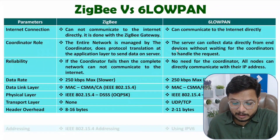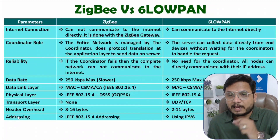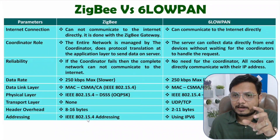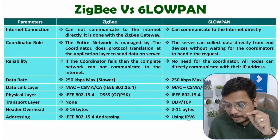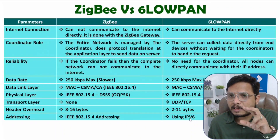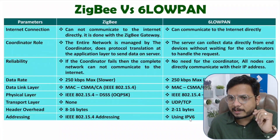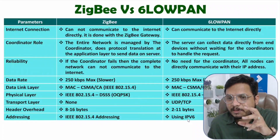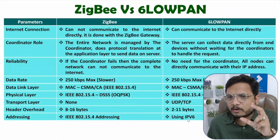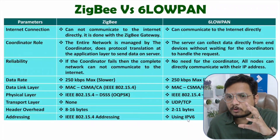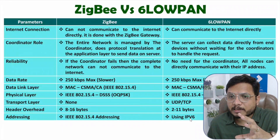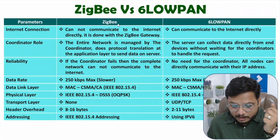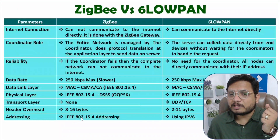The next parameter is the addressing scheme. In ZigBee, addressing is done as per the IEEE 802.15.4 standard. With 6LoWPAN, addressing is done using IPv6 addresses — logical addressing with a 128-bit IPv6 address. So 6LoWPAN requires 128 bits of IP address for addressing, while ZigBee uses addressing as per the IEEE standard.